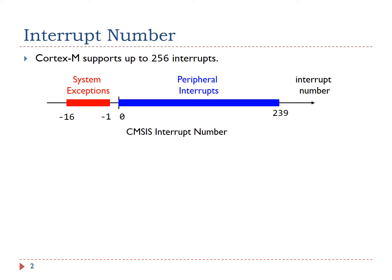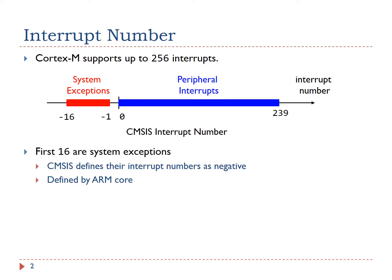A Cortex-M microcontroller supports up to 256 interrupts. Each interrupt, except the reset interrupt, has an interrupt number. The first 16 interrupts are system interrupts, also called system exceptions. Exceptions are the interrupts that come from the core. CMSIS defines all system exceptions by using negative values. CMSIS stands for Cortex Microcontroller Software Interface Standard.